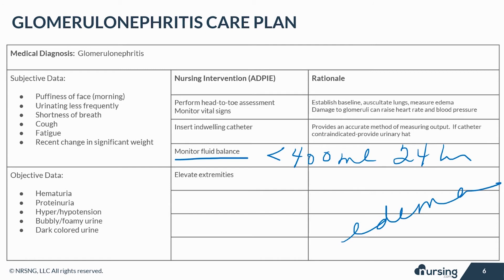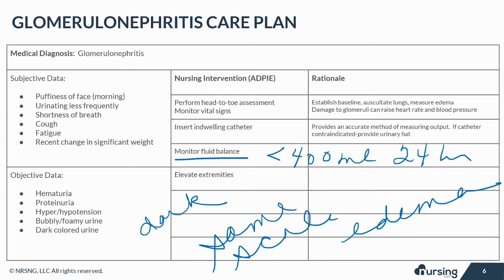Measure daily weights at the same time each day on the same scale. Greater than 5 kg per day is indicative of fluid retention. Note changes in the characteristics of the urine, including dark urine, frothy appearance, or hematuria. Provide elevation of the feet, ankles, and arms as necessary to allow gravity to assist in reducing edema. There may be a gain of up to 10 lbs of fluid before pitting is noticed.